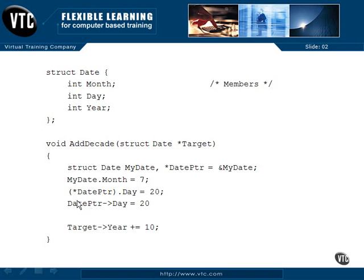That syntax gets really messy and hard to remember, so we use a new operator instead: the dash and greater-than, the arrow operator. These two things are exactly the same. 'datePointer->day equals 20.' This is an indirection done from a pointer to a structure — a member reference. This is how we use the pointer to get to a member of an item within the structure pointed to by datePointer.